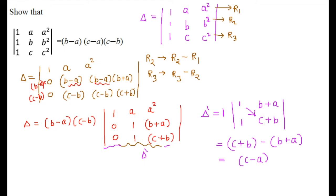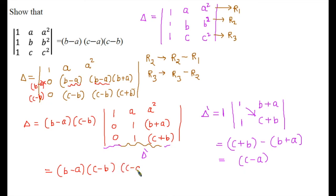So the final result is (b minus a) into (c minus b) into (c minus a). This is our final answer, which equals the right-hand side. Hence proved.